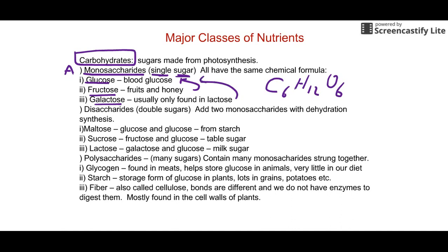The next group are disaccharides — double sugars. The three disaccharides are maltose, sucrose, and lactose. Lactose intolerance is when someone is missing the enzymes to digest lactose, causing stomach problems. The third group are polysaccharides — many sugars. Glycogen is found in animals as a stored sugar that can be broken down very quickly into monosaccharides for energy. Starch is what you're most familiar with, found in potatoes and pasta.